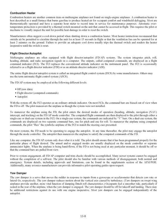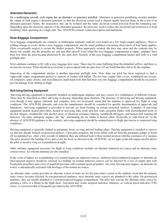Yaw Damper. The yaw damper is a servo that moves the rudder in response to inputs from a gyroscope or accelerometer that detects yaw rate or lateral Gs. The yaw damper reduces motion about the vertical axis caused by turbulence. Yaw dampers on swept-wing airplanes also provide the vital function of damping Dutch roll characteristics. The yaw damper should be off for takeoff and landing, and there may be additional restrictions against its use with one engine inoperative. Alternator/Generator. On a multi-engine aircraft, each engine has an alternator or generator installed. Paralleling circuitry matches the output of each unit so the electrical load is shared equally. In the event of a failure, the inoperative unit can be isolated and the entire electrical system powered from the remaining one. The pilot may need to perform load shedding when operating on a single unit.